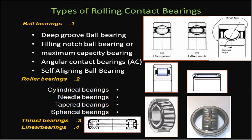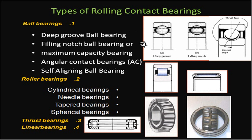Now let us discuss the different types of rolling contact bearings. For ball bearings, the first type is the deep groove ball bearing, where the groove is deep. There is a limitation on how many balls can be inserted into a deep groove ball bearing, which limits its load-carrying capacity. The load-carrying capacity depends on the number of balls, and the deep groove restricts the number that can be inserted.